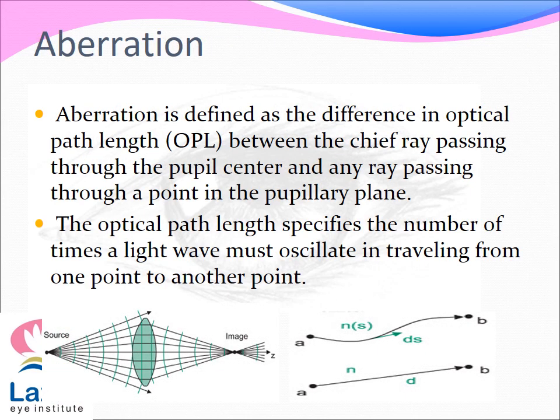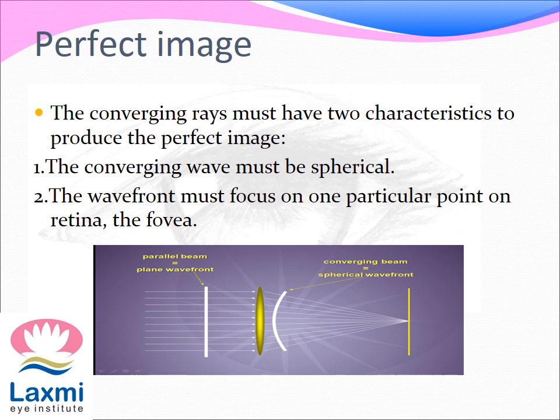Aberration is defined as the difference in optical path length, i.e. OPL, between the chief ray passing through the pupil center and any ray passing through a point in the pupillary plane. The optical path length specifies the number of times a light wave must oscillate in travelling from one point to another point. A perfect image will be formed when the converging rays have a spherical wavefront and they should focus on one particular point on the retina, i.e. the fovea.